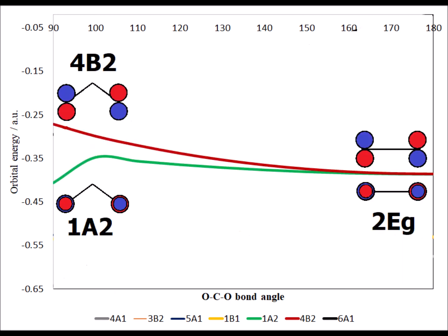4B2 and 1A2 are largely non-bonding since they have no contribution from the central carbon atom. 4B2 begins higher in energy, but the two converge to the same degenerate representation, 2Eg. Again, the 2py orbitals on the 4B2 orbital become indistinguishable from the 2pz orbitals on 1A2 when the molecule becomes linear.